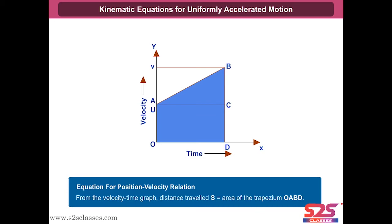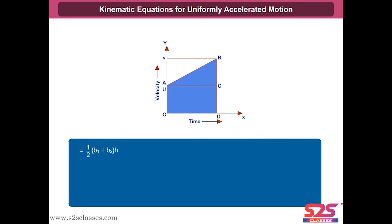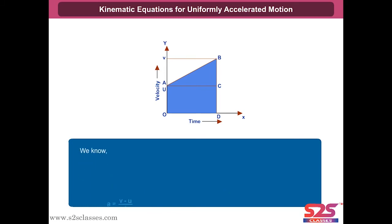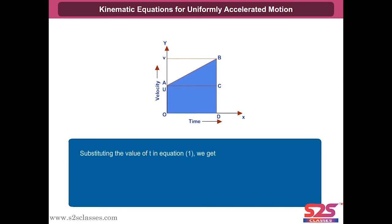The distance S equals the area of trapezium OABD, which equals half times (V1 plus V2) times H, giving S equals half times (U plus V) times T. This is equation one. Since A equals V minus U by T, we get T equals V minus U by A. Substituting into equation one: S equals half times (V plus U) times (V minus U) by A, yielding V squared minus U squared equals 2AS.